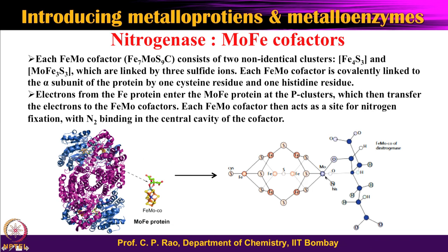At the molybdenum center, there are 3 plus 3 coordinations, and a citrate-based group is also involved. Each iron-molybdenum cofactor is covalently linked to the alpha subunit of the protein by one cysteine residue and one histidine residue — unlike the iron-sulfur P cluster, where all connections are through cysteines.